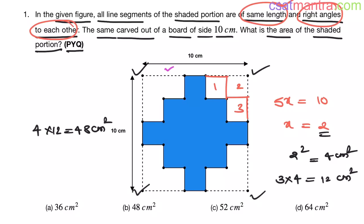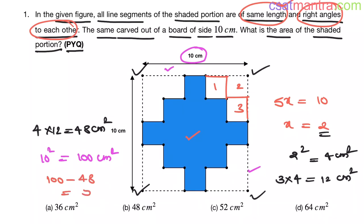The dotted line outer square area is 10 squared, and the bigger square side is 10 centimeters, so that is 100 centimeter square. The shaded portion area would be 100 minus 48, that is equal to 52 centimeter square.